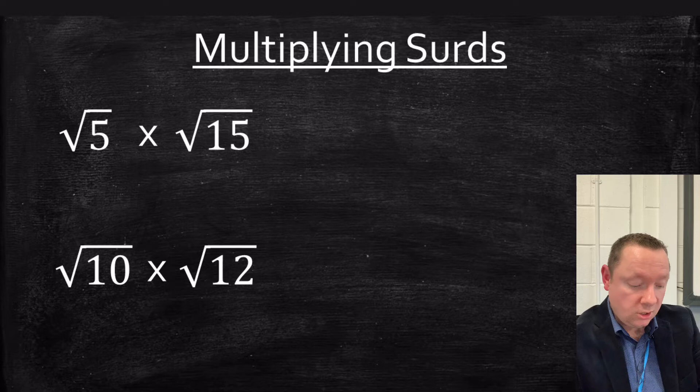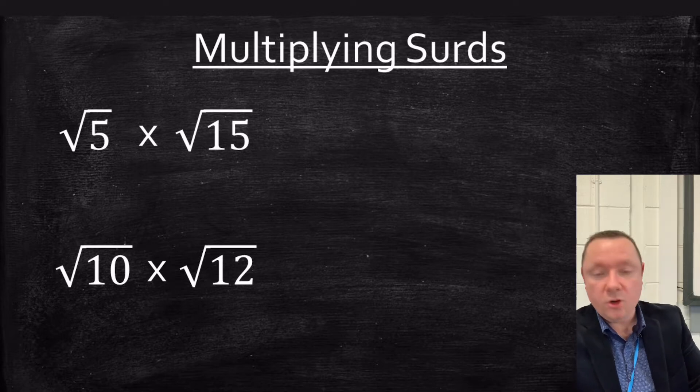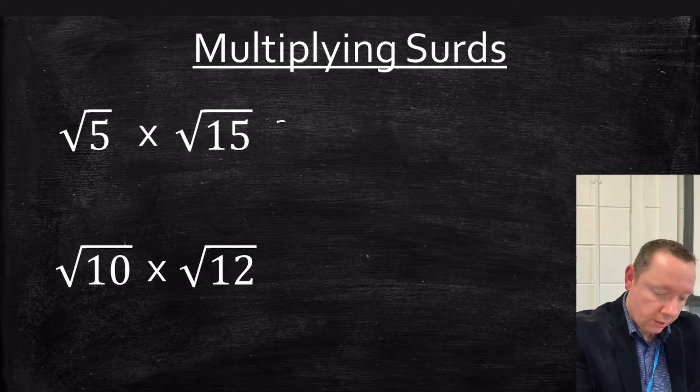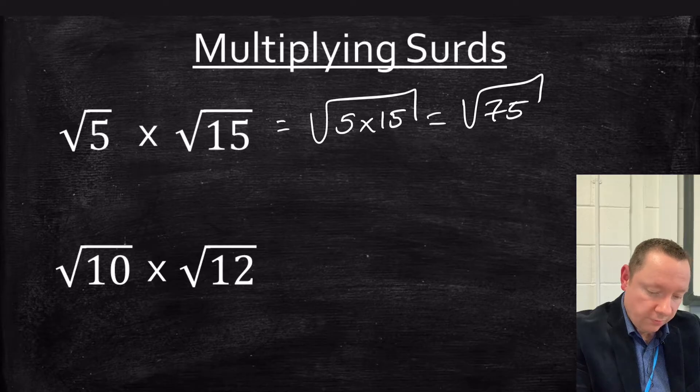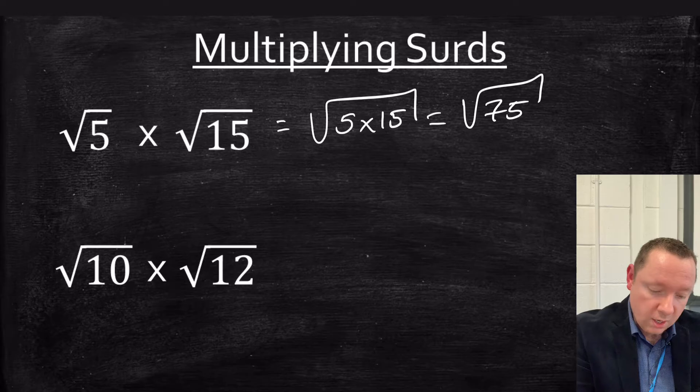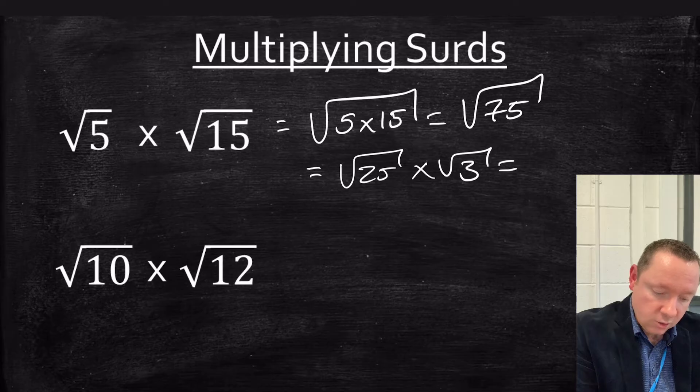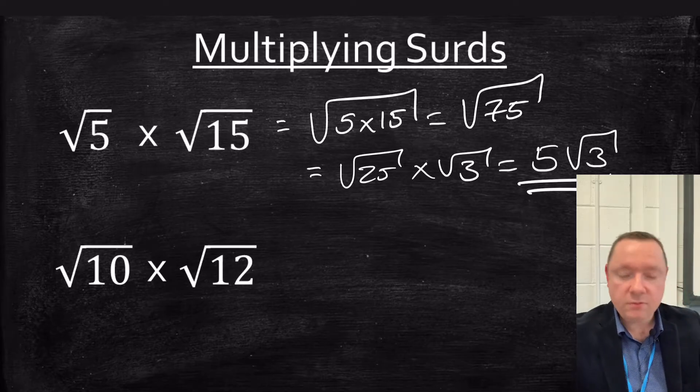Multiplying surds. If you've got two numbers with a root and you want to times them together you can just times the numbers that are under the root. So I can do the square root of 5 times 15, that's the square root of 75. But if you can simplify it you then simplify it. That's just 25 times 3. The square root of 25 is 5. So 5 root 3 is our final answer.